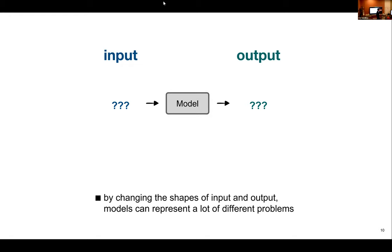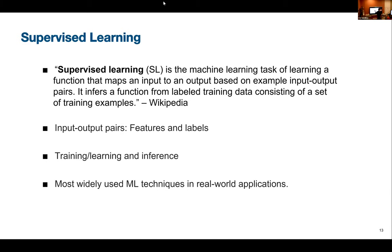Let's revisit supervised learning. Supervised learning is the machine learning task of learning a function that maps an input to an output based on various example input-output pairs. It infers a function from labeled training data. Supervised learning models take data that is already labeled and prepared — we know what the outputs are, we know what inputs correspond to those outputs, and we use that to build our model.